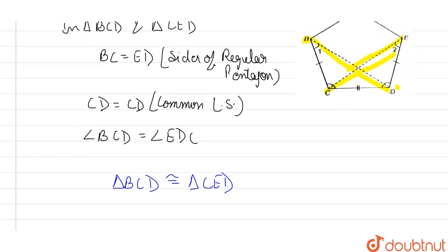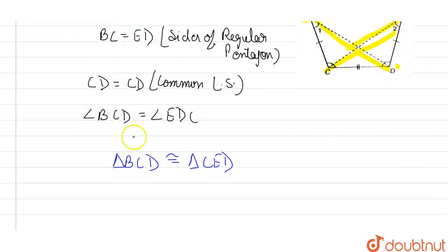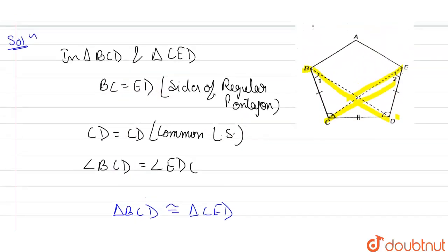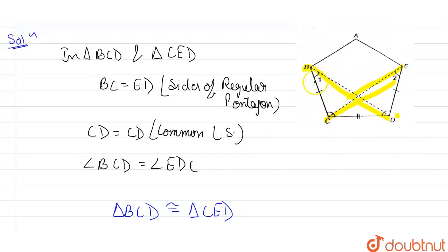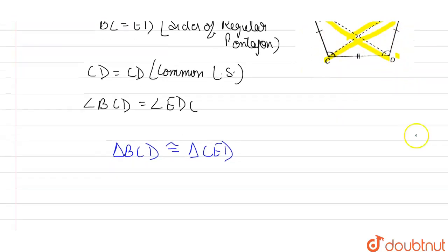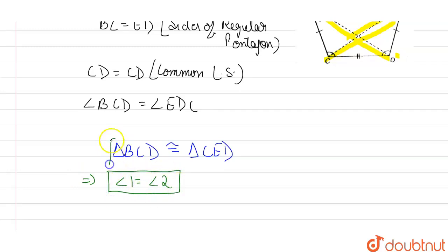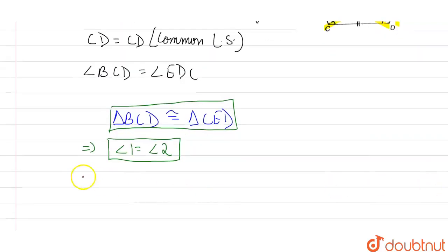Since these two triangles are congruent, let angle CBD be angle 1 and angle CED be angle 2. Then it follows that angle 1 equals angle 2, due to the congruency of the two triangles I have just proved.